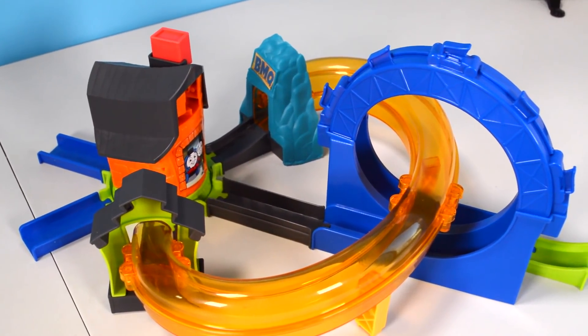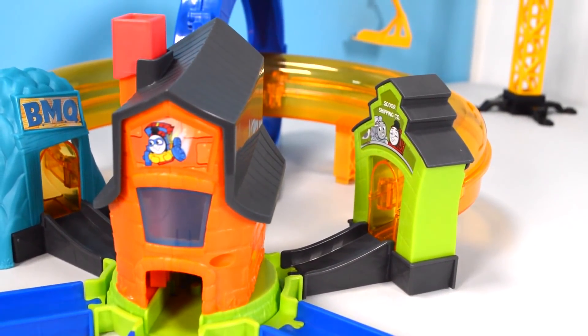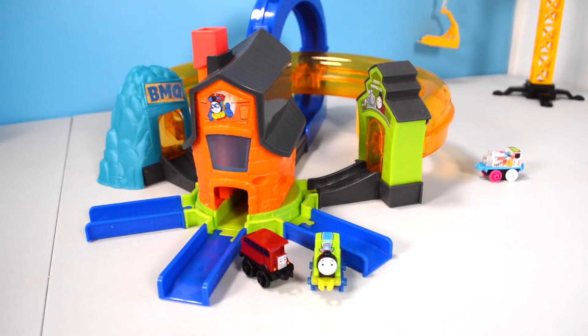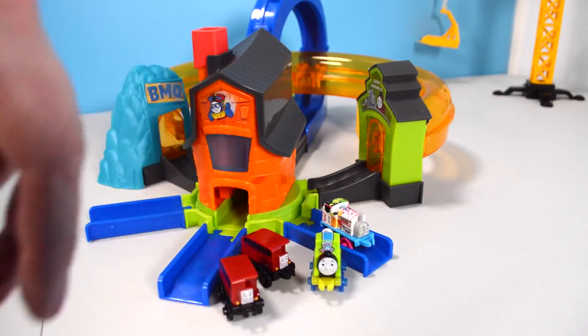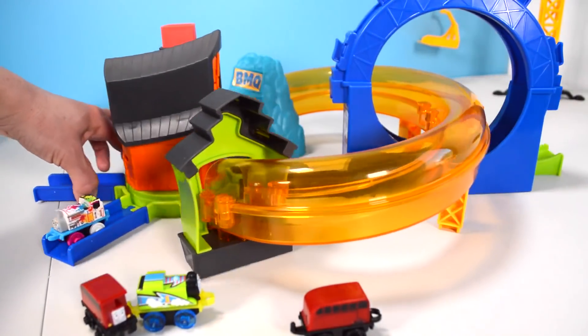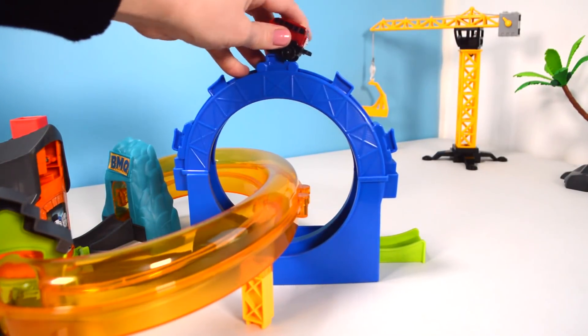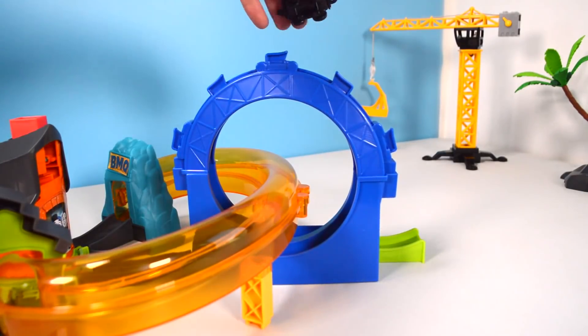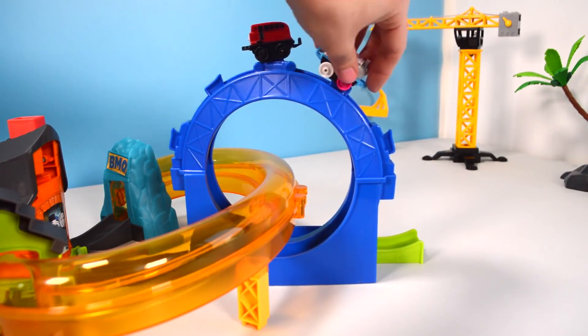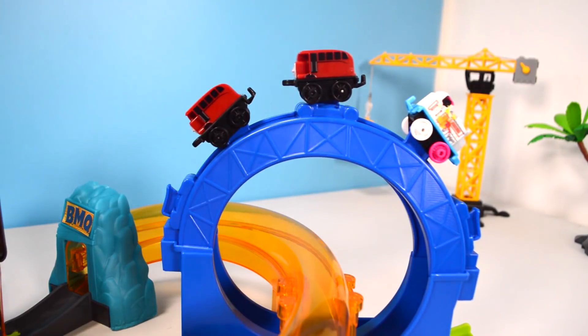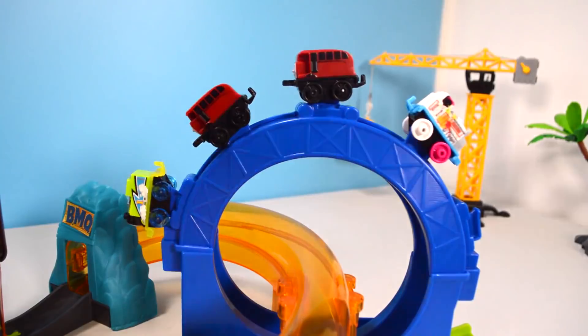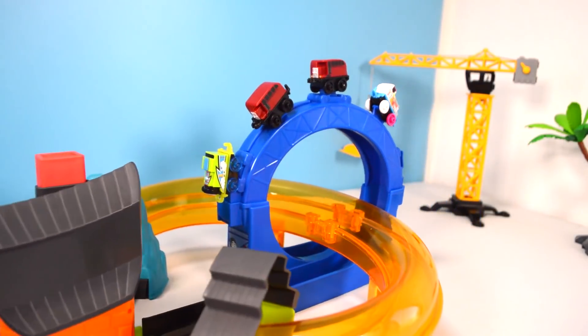Nice work, Thomas. This is a super fun collection. And you know what? Not only is this a launcher, it can also store your minis. Check it out. Right on top of the hoopty loop, there's a hook. And then you just hook on your minis. And they're hanging on. Perfect. So cool. You can hang up to five minis. We have four. But you have an extra spot here. What an amazing collection.